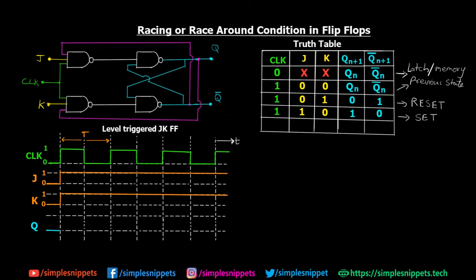Let's take a quick recap on the JK flip-flop. As you can see, we have a circuit diagram of the JK flip-flop — however, this is a level triggered JK flip-flop. The JK flip-flop is used to avoid the race condition, and it does so by using two feedback loops — the pink lines you can see — which gives rise to a toggle state.